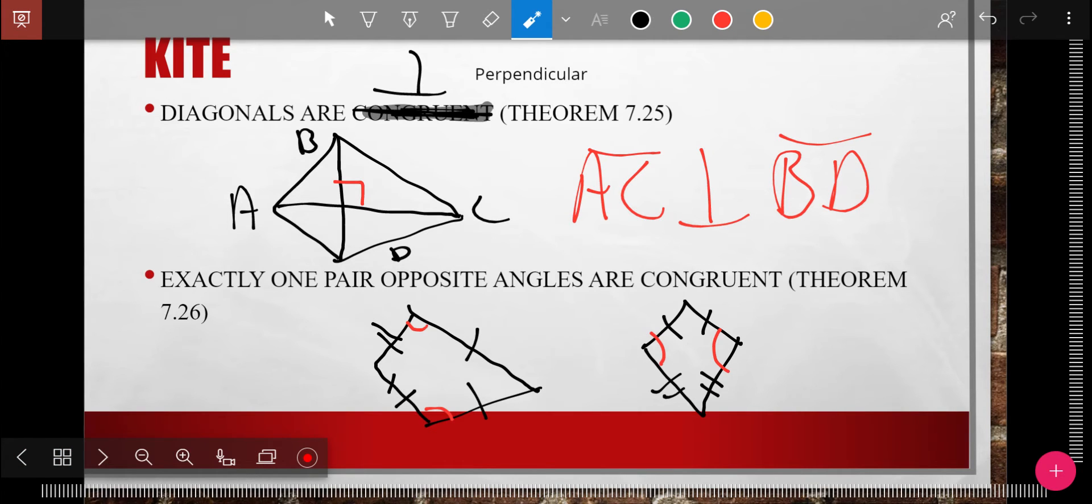And just like in a rhombus, diagonals are perpendicular. I put congruent there originally, and it's perpendicular. So I drew the picture out here for you, and this picture of a kite, I should probably mark that this side is congruent to this side, and this side is congruent to this side, so you know it's a kite.